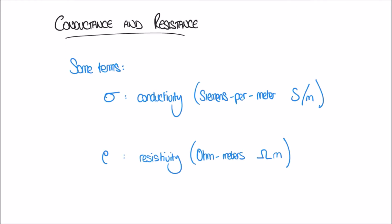Welcome to this video on conductance and resistance. In a previous video we looked at five key quantities: charge, current, voltage, power and energy. In this video we're going to consider two new quantities: conductance and resistance. It's important to realize that conductance and resistance are not the same things as conductivity and resistivity.